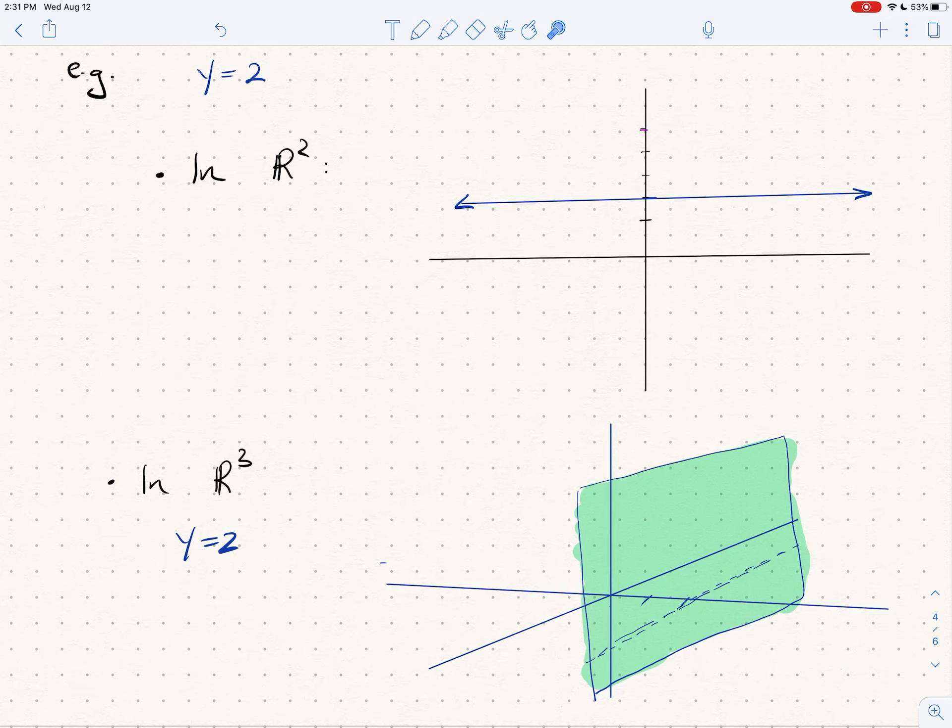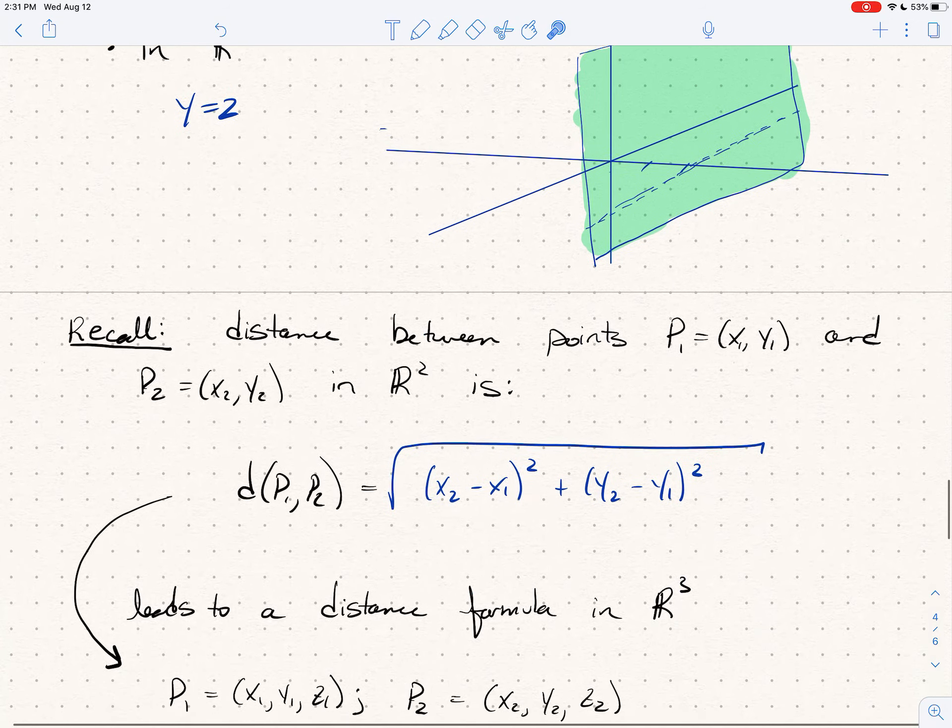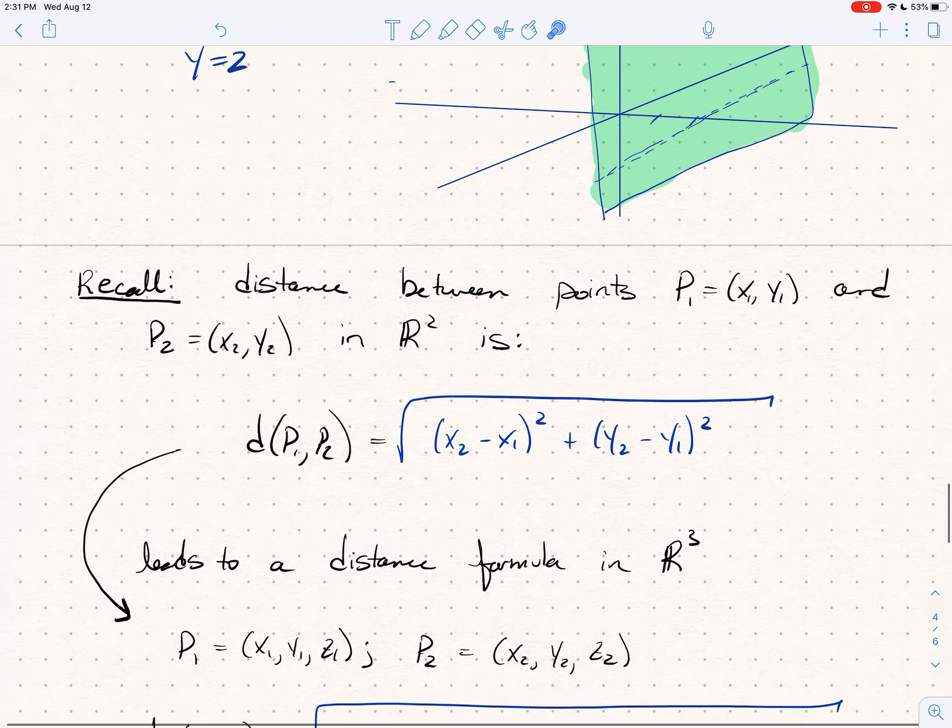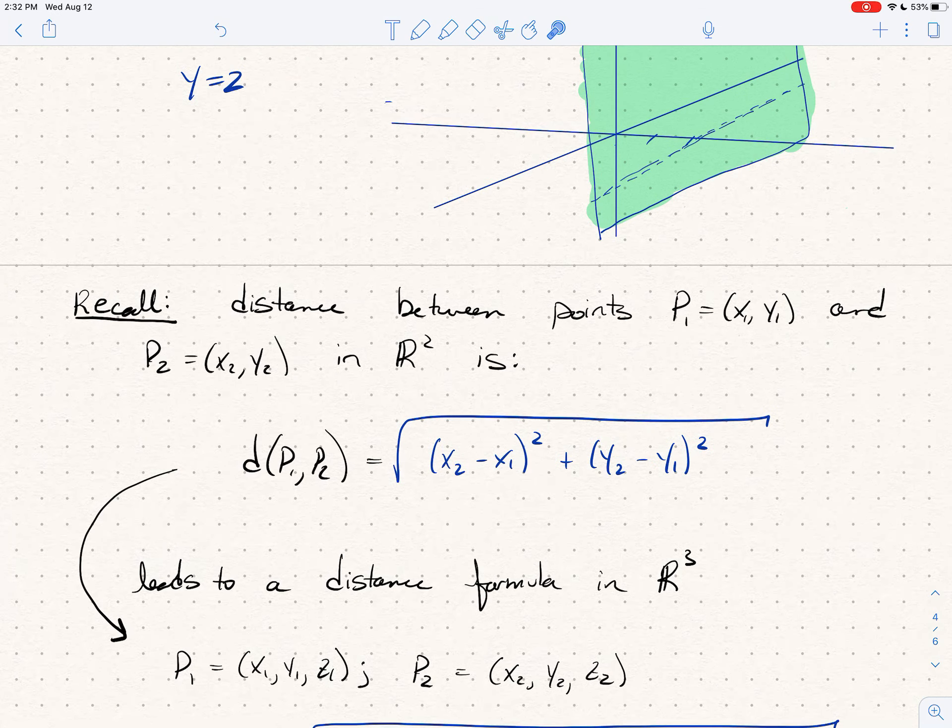Okay, you should recall the distance formula for two points. If I want to compute the distance between two points in two space, maybe my first point is (x₁, y₁), second point (x₂, y₂), the distance between them is the radical of (x₂ - x₁)² plus (y₂ - y₁)².